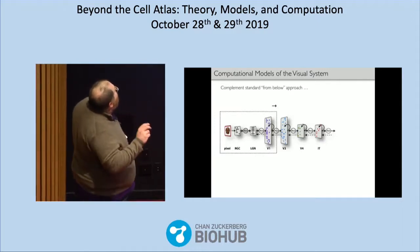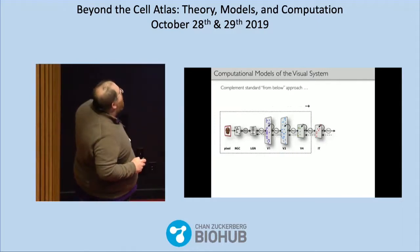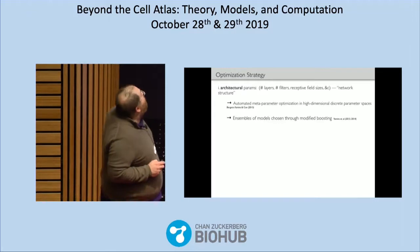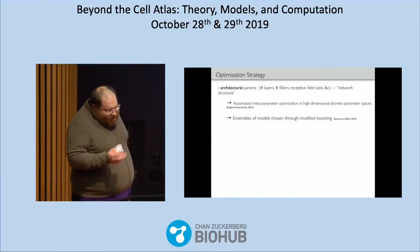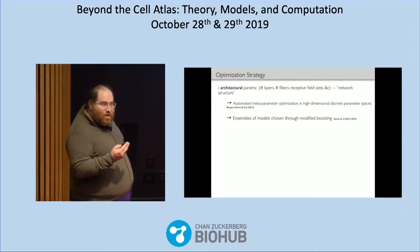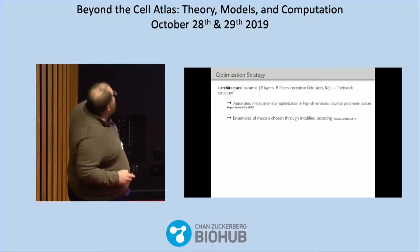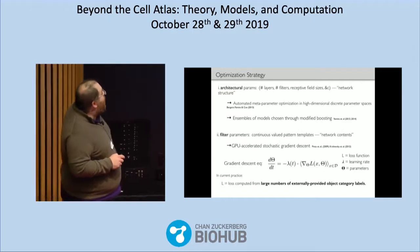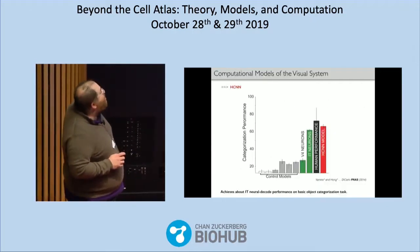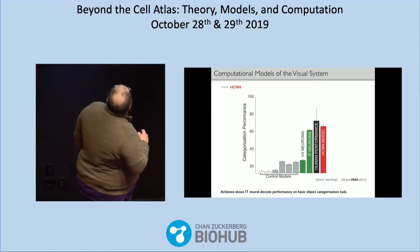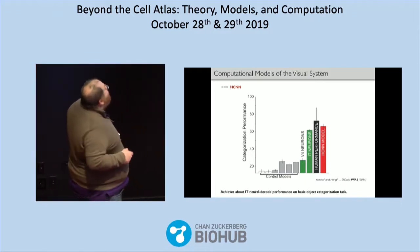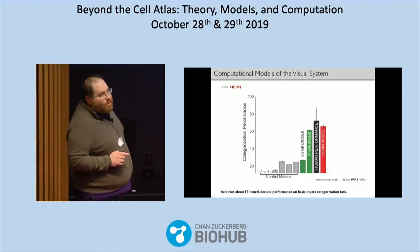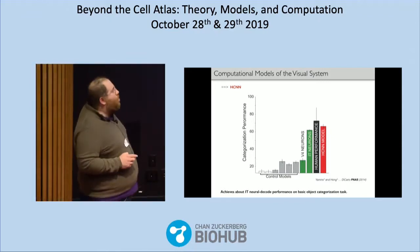The strategy we started using — essentially the same strategy we just heard about — is to optimize the network to do the actual task we think it needs to do behaviorally, and use that to fit the parameters, then separately compare to neural data ex post facto. It's like complementing a standard from-below approach by imposing something on the top and seeing how much constraint that creates throughout the system. There was architectural parameter optimization for discrete parameters and continuous optimization for the filter parameters, producing a five-layer convolutional network that solved the task that humans and IT neurons did.